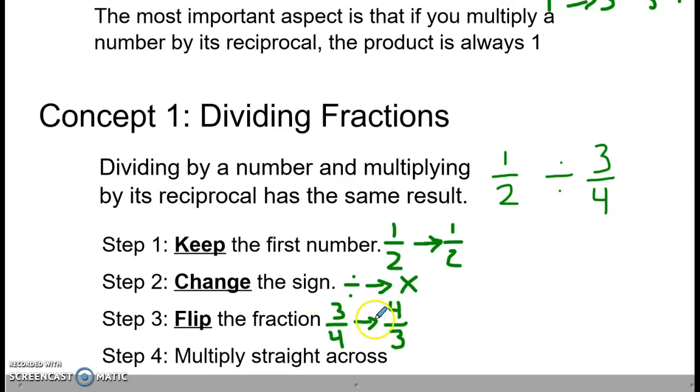3 fourths becomes 4 thirds. If we start with 1 half divided by 3 quarters, it's going to become 1 half times 4 thirds. Once we've done our keep, change, flip, we're going to multiply straight across. 1 times 4 is 4, and 2 times 3 is 6. We would simplify this by dividing both top and bottom by 2 to get 2 thirds.